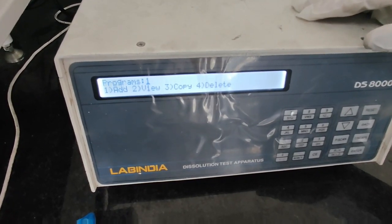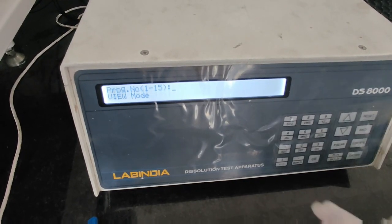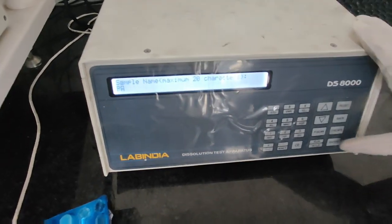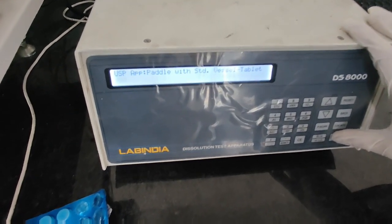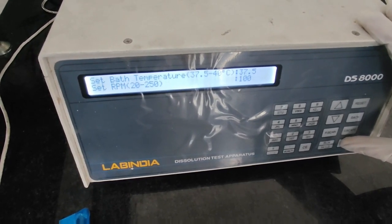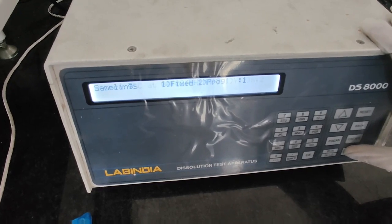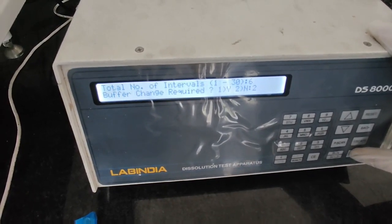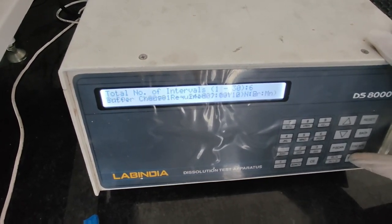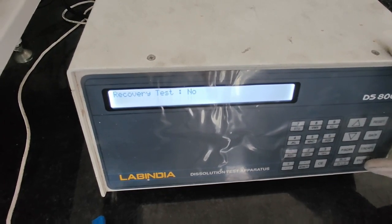Now if you want to view the program which you have set, press 2 and enter. Now it comes in the view mode. You have to enter the program name. It was 14. Press enter. Then PA was my sample ID. I have selected paddle type apparatus. Buffer volume will come. Then temperature is showing, and then bath temperature which I have set. RPM I have selected 100. Sampling is manual. Recording temperature 0, I don't want that. Sampling is fixed. Buffer change is required: I have selected no. Total number of intervals I have taken 6. Interval time is 10 minutes. Recovery test: no. So it is showing the program.